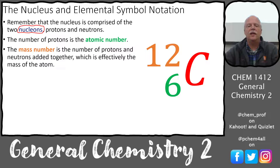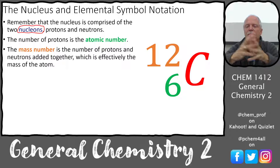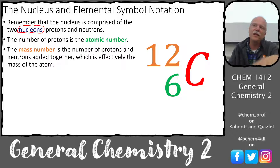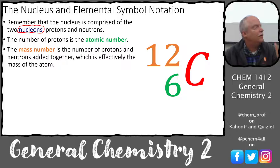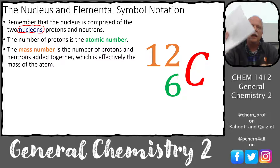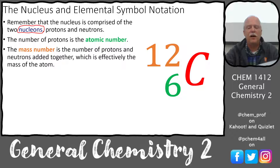The mass number is the number of protons and neutrons added together — the nucleons. In a carbon-12 atom we have 12 total particles in the nucleus; six of those are protons. This is roughly the mass of the atom because protons and neutrons weigh about a thousand times more than an electron. The mass on the periodic table shows 12.01 — those masses are averages of the natural abundance of the elements.